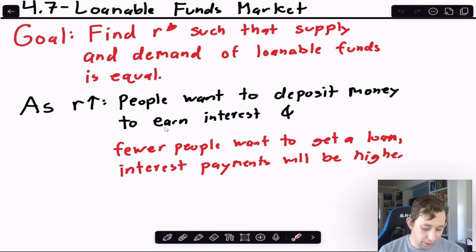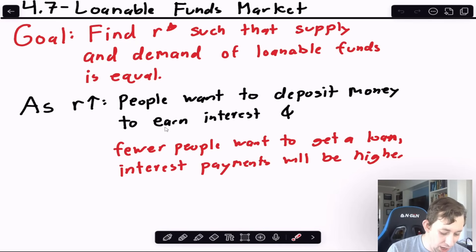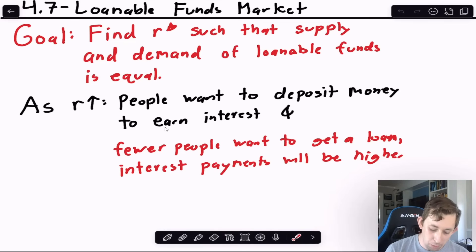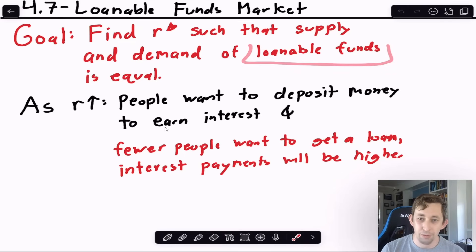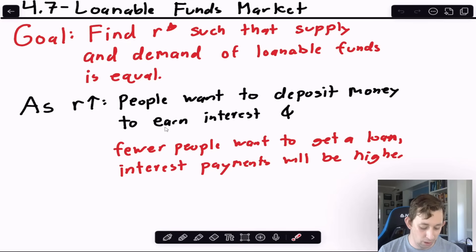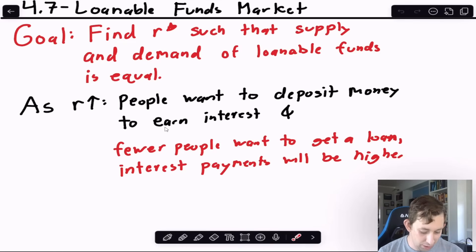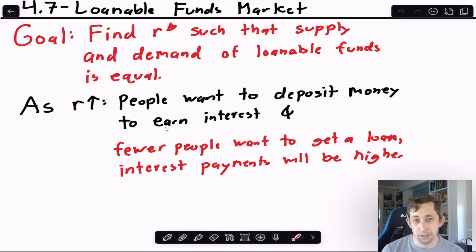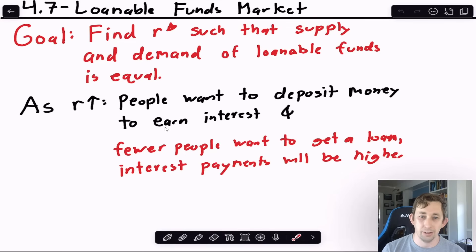The final graph before the AD/AS model is the loanable funds market, where our goal is to find the real interest rate r at which supply and demand for loanable funds are equal. Loanable funds represent the portion of deposits the bank can loan out — for example, with a 25% reserve ratio, 75% is available for lending. As the real interest rate rises, people want to save more in banks, so the supply of loanable funds increases.